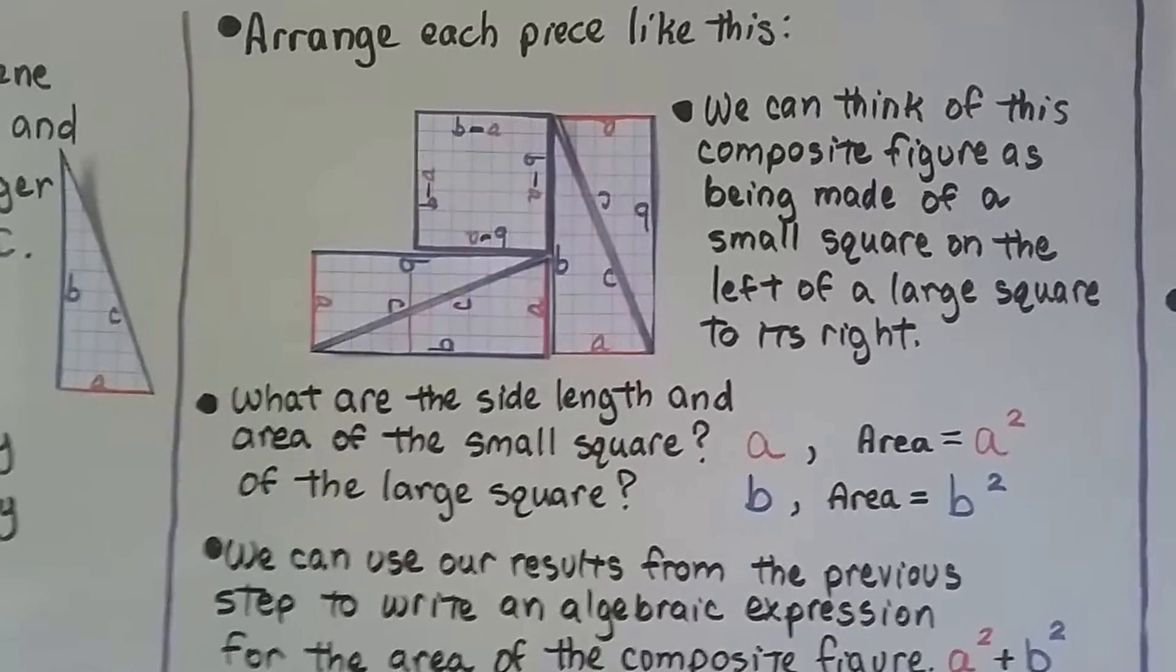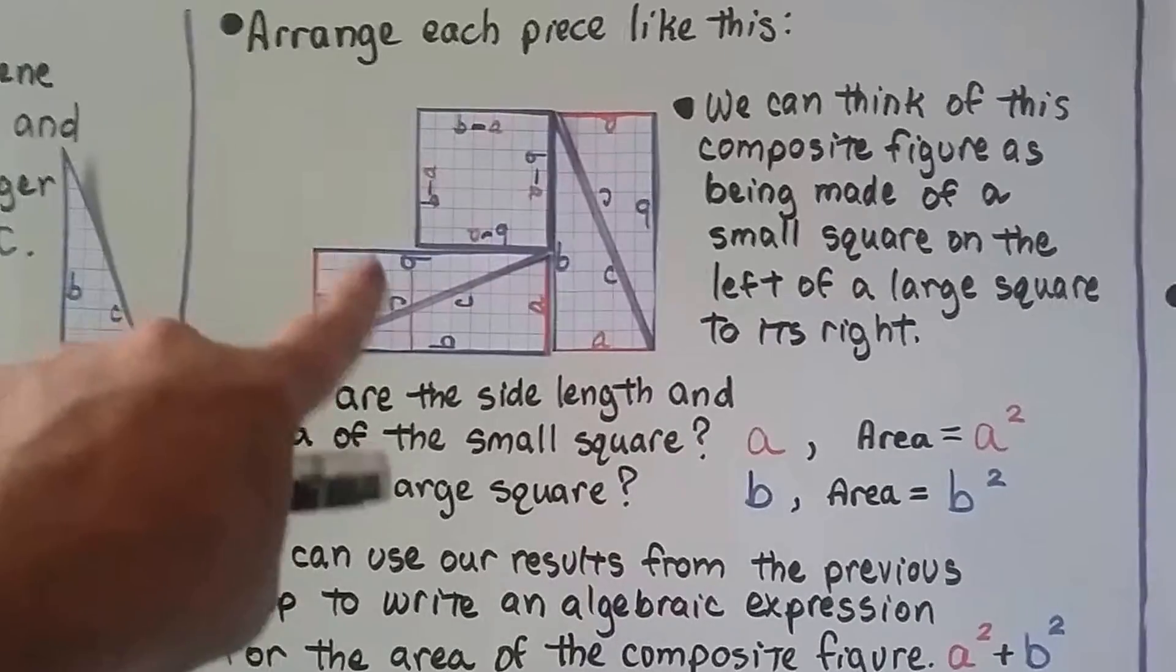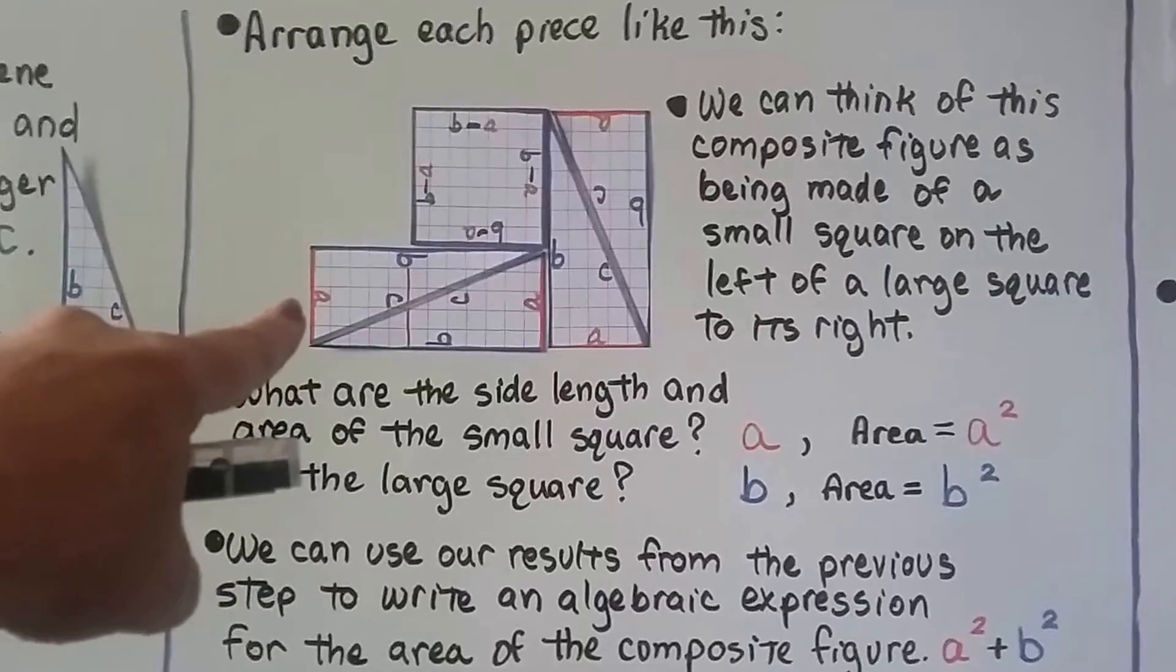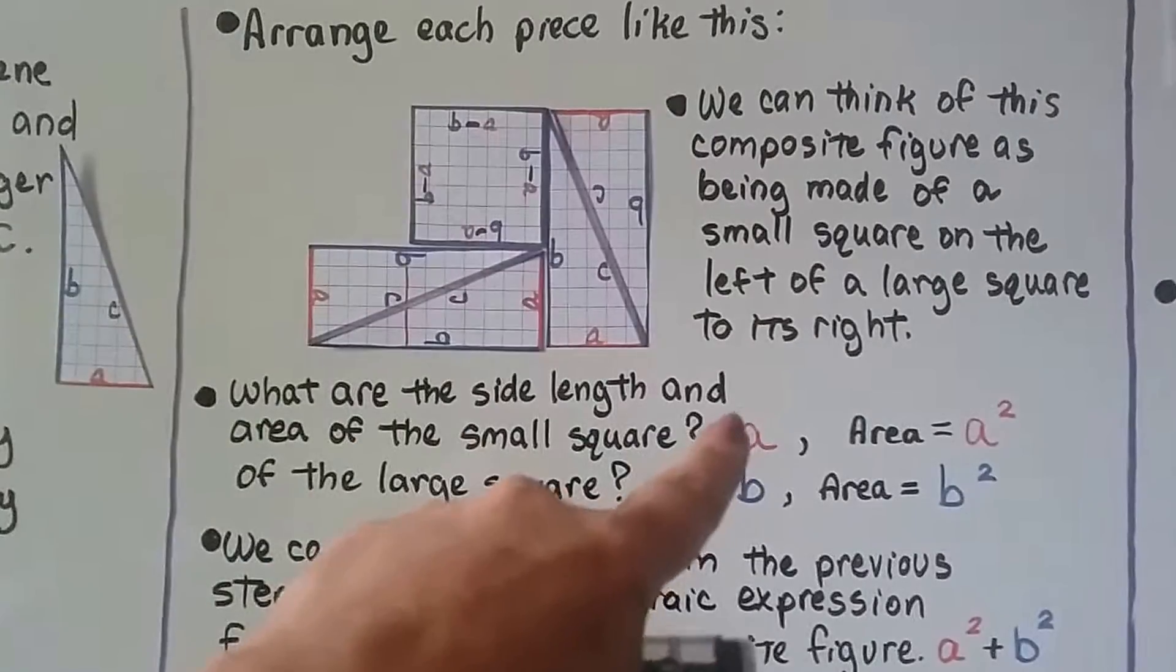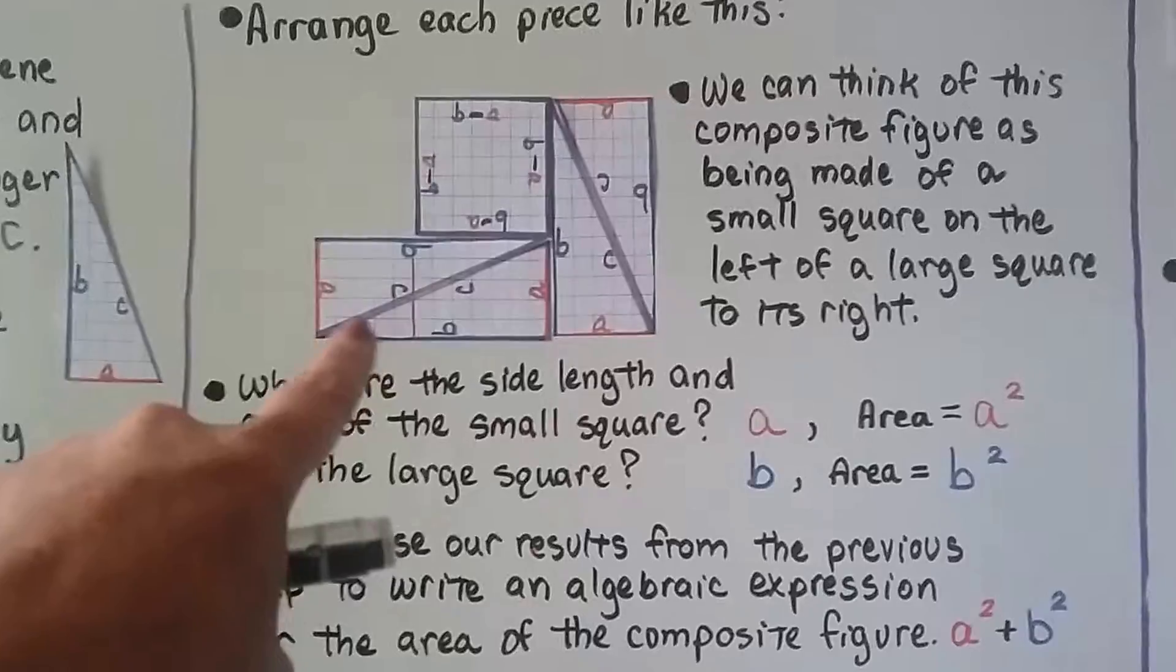So what are the side length and area of this small square? Well, we can see the side is a, so the side length is a, and the area of this little one would be a squared.